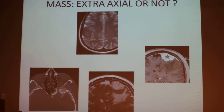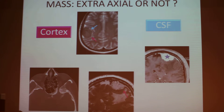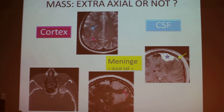When you have a mass, to determine if it is extra-axial or not, you have some clues. The first clue is to look at the cortex. When we have an extra-axial mass, the cortex is in between the brain and the skull, and it is pushed by the mass as you can see here. The CSF is around the mass.